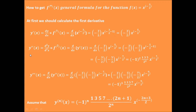Then we carry out the second derivative, which is the derivative on the first derivative function. So we take the derivative of minus 3/2 times x to the minus 5/2, which equals minus 3/2 times minus 5/2 times x to the power of minus 7 divided by 2. This can be written as minus 1 squared times 1 times 3 times 5 divided by 2 squared times x to the power of minus 5 divided by 2.